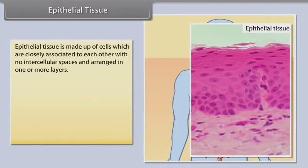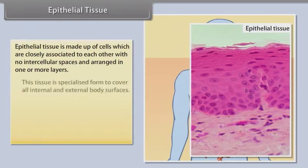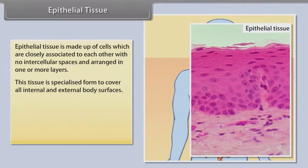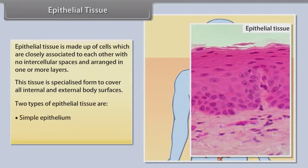Epithelial tissue is made up of cells which are closely associated with no intercellular spaces and arranged in one or more layers. This tissue is a specialized form to cover all internal and external body surfaces. The two types of epithelial tissues are simple epithelial tissue and compound epithelium.